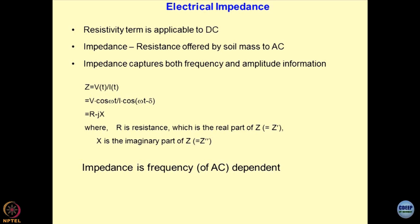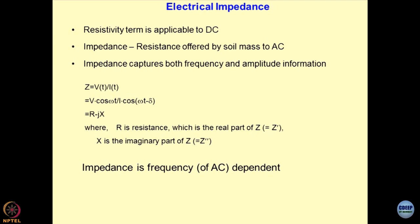r becomes the real part of the resistance and x becomes the imaginary part of the resistance. Whenever we measure the impedance of samples, it can be represented as a combination of real and imaginary parts. These real and imaginary parts can then be utilized to decipher a lot of information from the geomaterials.